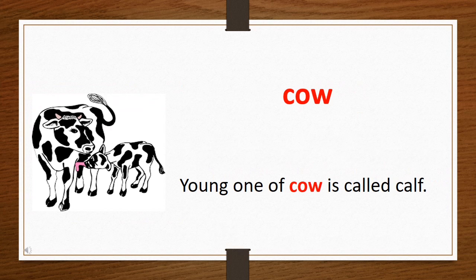The word is 'cow.' Children, we all know cow is a domestic animal. Now let's use cow in a sentence: The young one of a cow is called a calf.